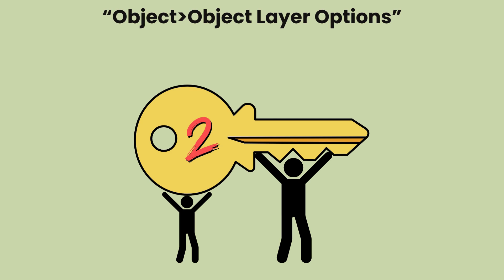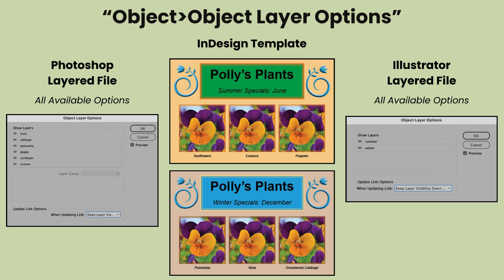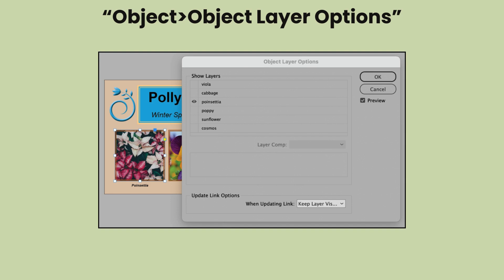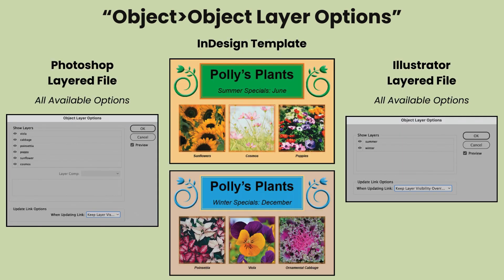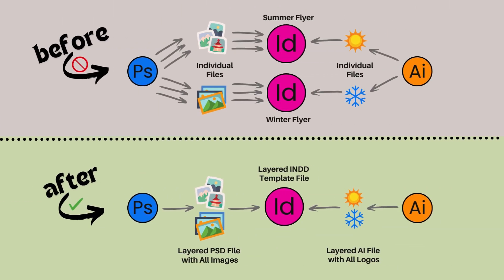But what happens if you want to change the layer visibility options on a placed file? That's the second key. In this example, I have two seasonal flyers for Poly's Plants in one InDesign document. After placing one instance of the Photoshop images file and one instance of the Illustrator logos file, I copied and arranged these instances in my InDesign template. Once that's done, I can click on each file instance and go to Object > Object Layer Options to select which file layer I want to display for each image or logo placeholder. And presto — I now have exactly what I want, and it only involved two additional files, not eight. And that is only one way that you can use the integrated team power of these programs to simplify and streamline your workflows.